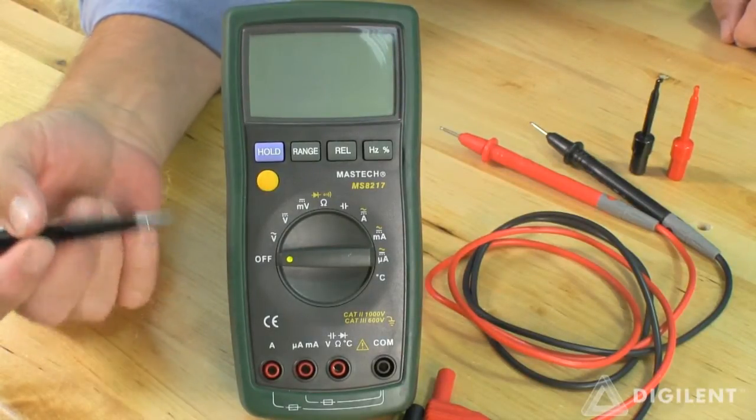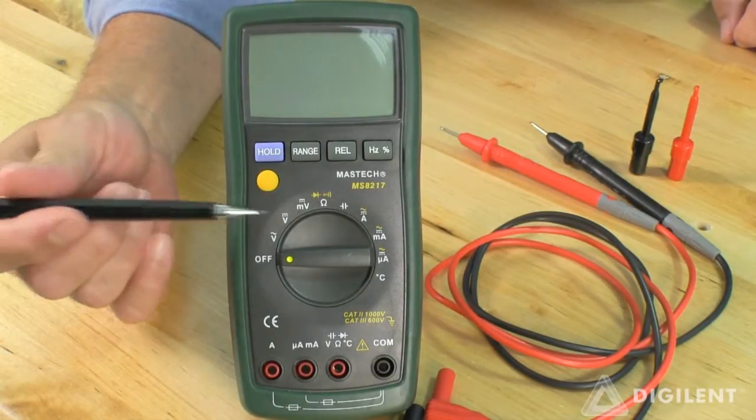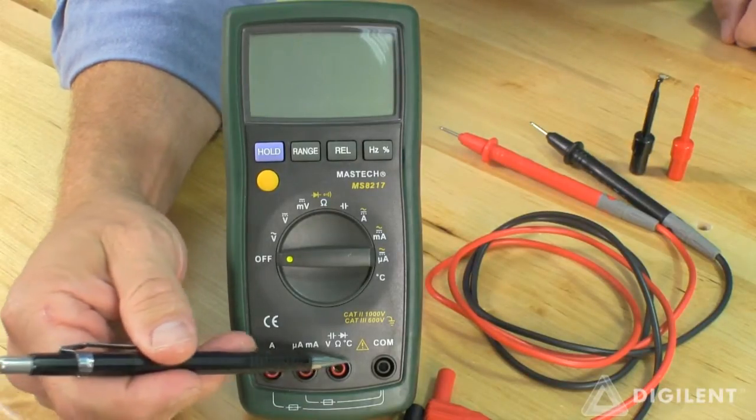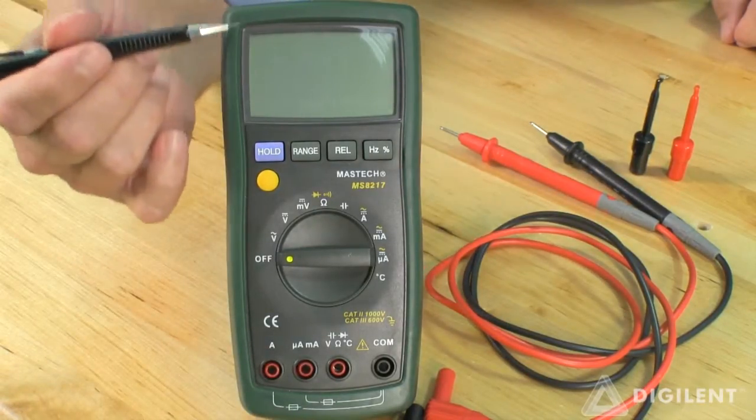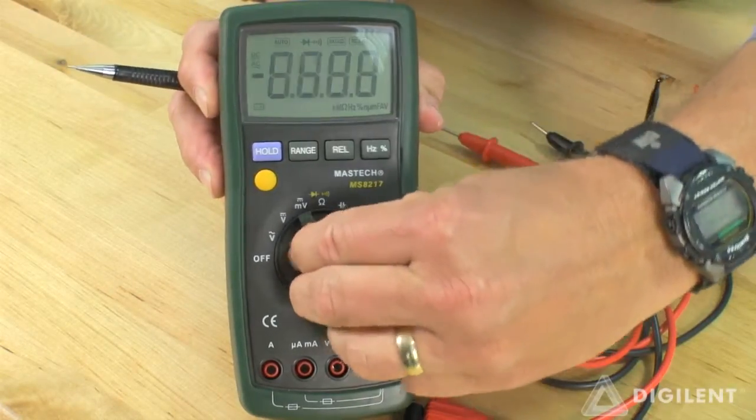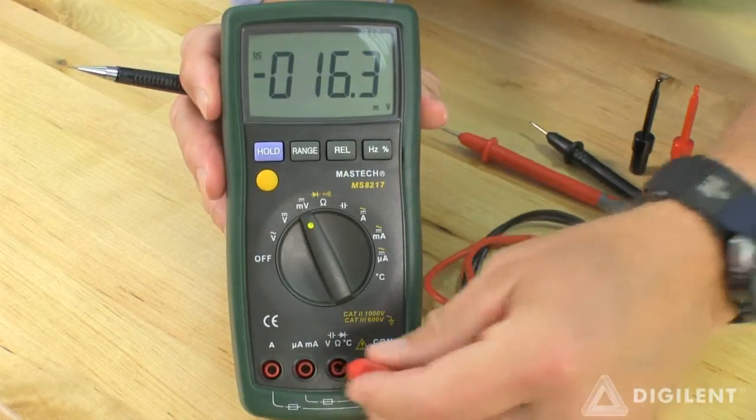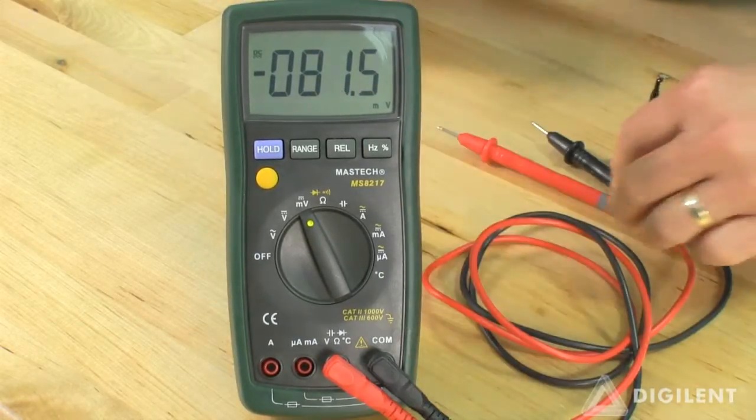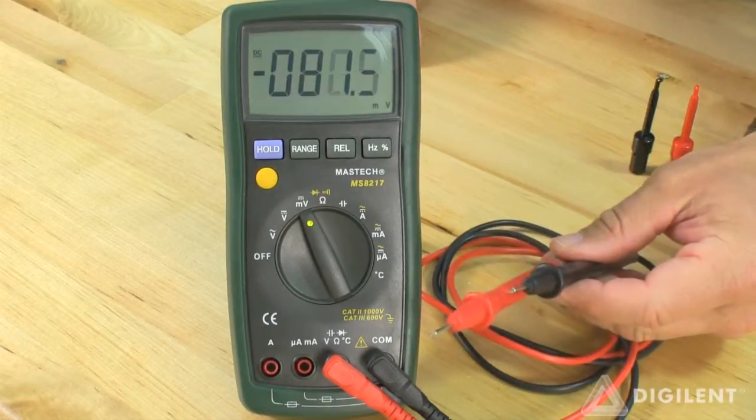This is the handheld DMM from Digilent's website. It has a dial on it you can use to select different functions, a series of ports into which you can plug your probes, and a screen where the measurement is displayed. To make a measurement, select your function, plug the probes into the appropriate ports on the DMM, and then connect the probes to your circuit.